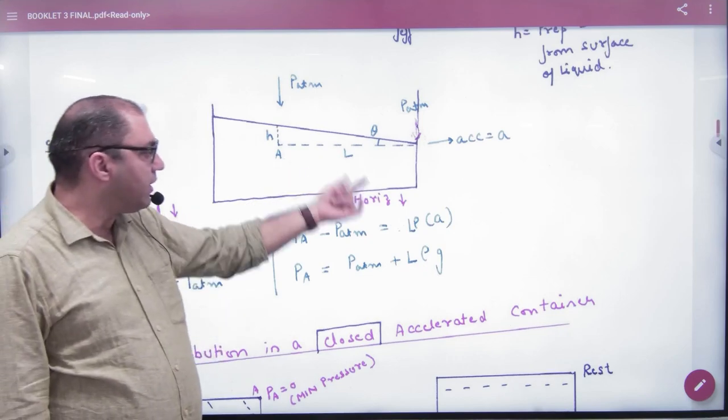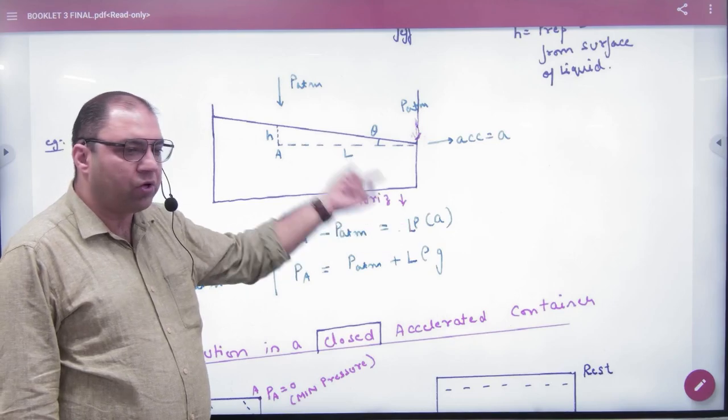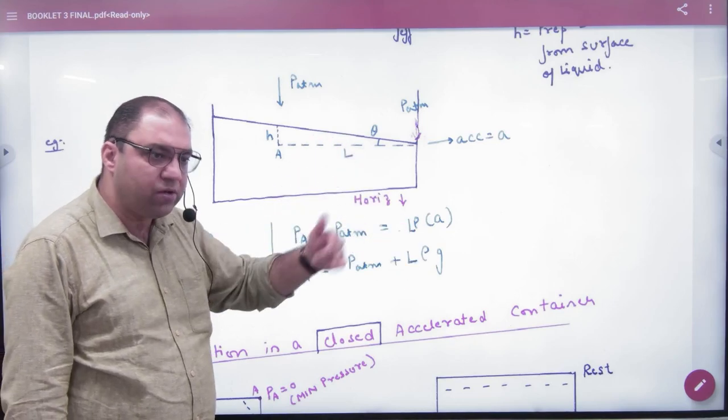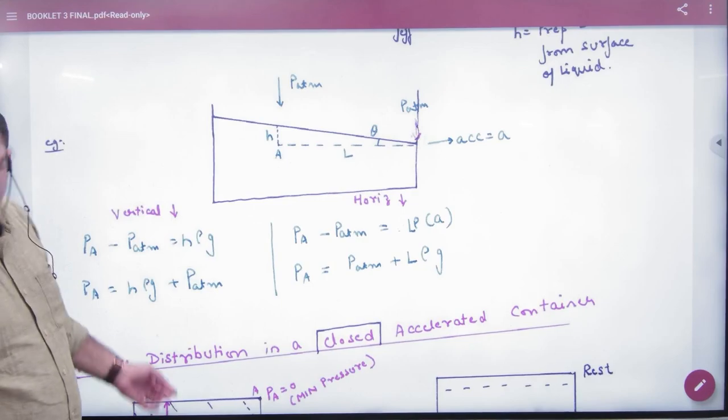What will be the terms? H becomes L, density is Rho, and G becomes A. So it's L-Rho-A. This was taught for horizontal cases.